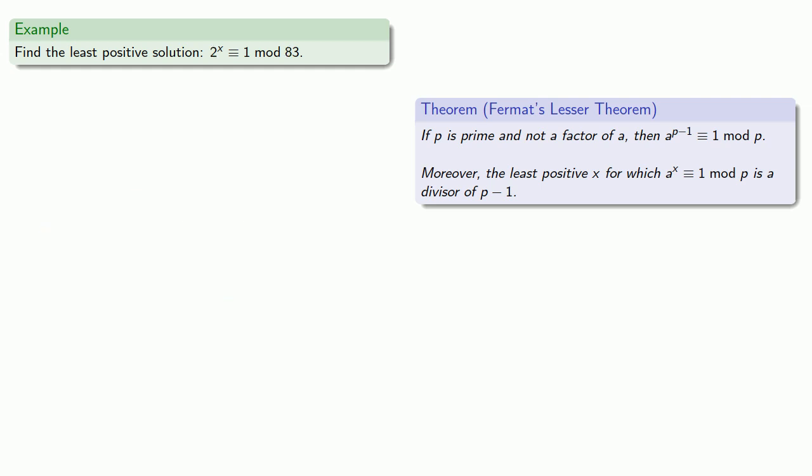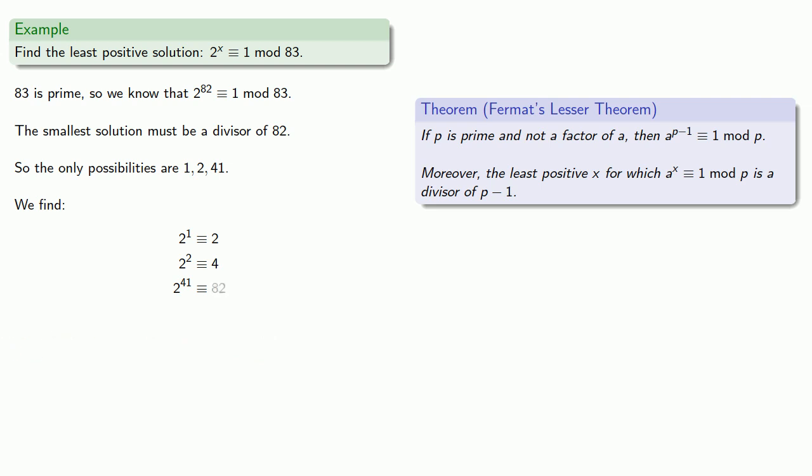We could find the least positive solution to 2 to power x congruent to 1 mod 83. Again, we know that 83 is prime, so we're guaranteed that 2 to power 82 is congruent to 1 mod 83. The smallest solution must be a divisor of 82, so the only possibilities are 1, 2, or 41. We check: 2 to the 1st, 2 to the 2nd, and 2 to the 41st are all not congruent to 1. So x equals 82 is the smallest positive solution.